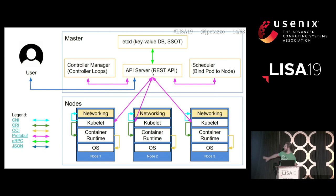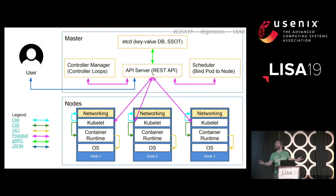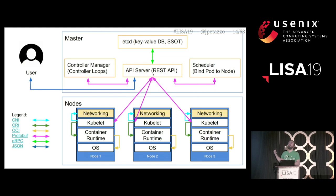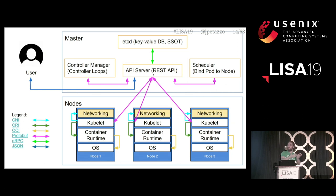Then we have our nodes at the bottom. The nodes are connecting to the API server through the kubelet agent. On each node we have kubelet, which connects to the API server to say 'I'm node number 52, do you have any work I should be doing?' The control plane replies 'welcome to the cluster, I would like you to start this pod and this container.' Then kubelet works on that and continuously reports back to the control plane about the status and health of those containers.